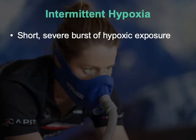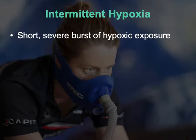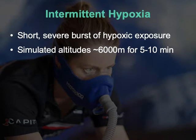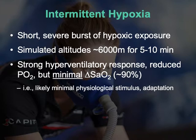But what if 15% O2 isn't enough of a stimulus? A more accentuated version — intermittent hypoxia — is characterized by short, severe bursts of exposure, usually mimicking about 6,000 meters. This is high altitude exposure for very brief periods, essentially moving to Everest Base Camp in a second. Maybe that abruptness triggers larger adaptations. We do observe strong hyperventilatory responses, SNS activation, and some reduction in PO2 from the normal ~100 mmHg, though not enough to really compromise saturation.